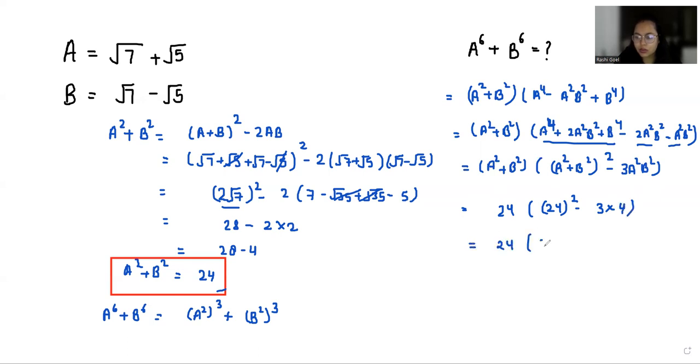24 square is 576 minus 12, so 24 times 564, which equals 13,536.